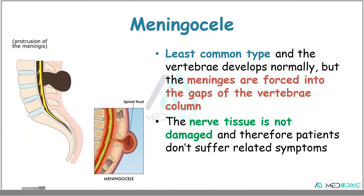The next type of Spina Bifida is Meningocele. Meningocele is the least common type; the vertebrae usually develop normally but the meninges are forced into the gaps of the vertebral column. The nerve tissue is not usually damaged, and therefore patients with Meningocele do not suffer any related symptoms.